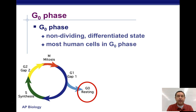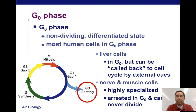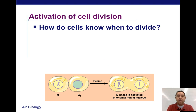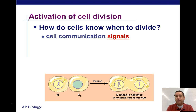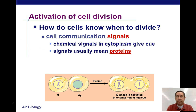The G0 phase is a non-dividing, differentiated state. Most human cells are in the G0 phase at any given point in time. With the exception of skin cells, most cells don't divide nonstop. Liver cells go into this G0 state but can be called back when new cells need to be replaced. Nerve and muscle cells never come out of that G0 phase. Signals that cause cell division are usually proteins — an activator is going to cause the cell to move toward division, while an inhibitor is going to stop it.